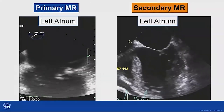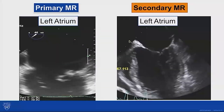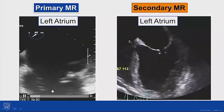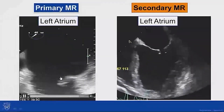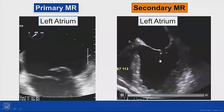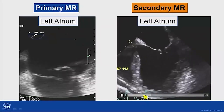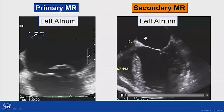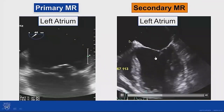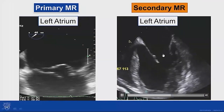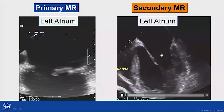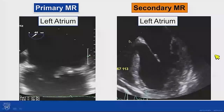A nice example: on the left side, similar to the last case of primary MR on TEE — left atrium at the top, ventricle at the bottom — we can see a flail P2 segment. On the right side, secondary mitral regurgitation: we've zoomed out, the mitral valve is in the middle, the ventricle is not contracting normally, the leaflets are apically displaced and tethered by the chordal apparatus, unable to coapt well, resulting in severe regurgitation.